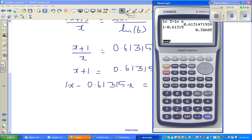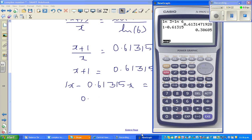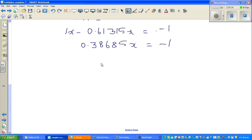Now you've got one takeaway 0.61315 gives me 0.38685. So 0.38685x is equal to negative 1, and dividing both sides by this number, x is negative 1 over 0.38685.